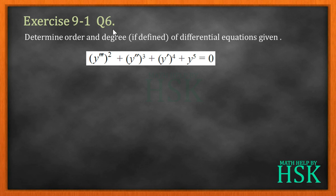In question number 6 we have been given the differential equation: y''' whole square plus y'' whole cube plus y' whole to the power of 4 plus y to the power of 5 equal to 0. Here y''' means the third derivative of y with respect to x, y'' means the second derivative, and y' means the first derivative of y with respect to x, that is dy/dx.